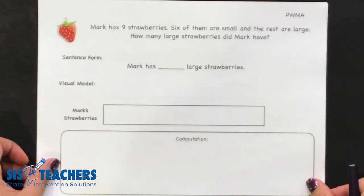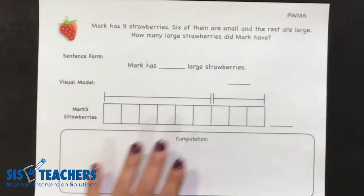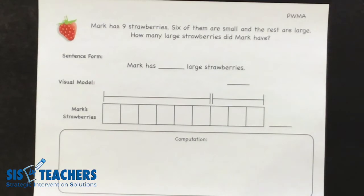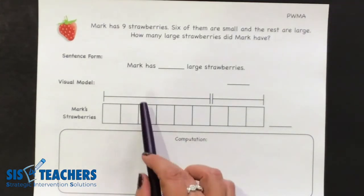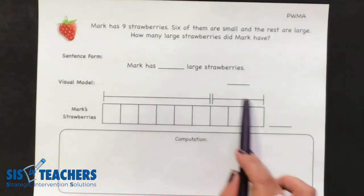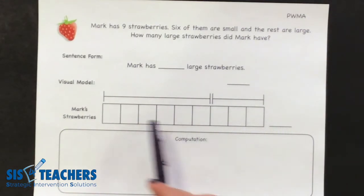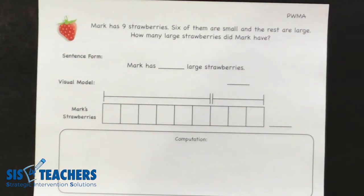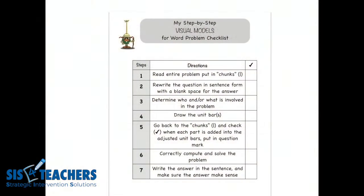At the beginning of first grade, you might be working a little bit more from that proportional level and then eventually moving up into a non-proportional bar. We have a lot of scaffolds on this particular journal to help students start to develop the skills for story problems. We're going to look at our step-by-step checklist that really helps us with visual models. There are seven steps that we do in the first grade classroom.